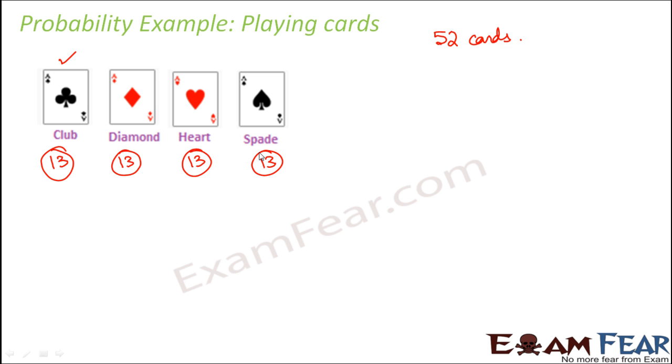So that's how the cards look like. Basically, you have a total of 52 cards, 4 types of cards, and each type has 13 cards.